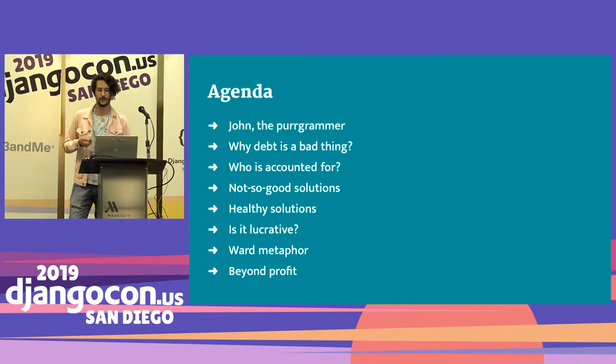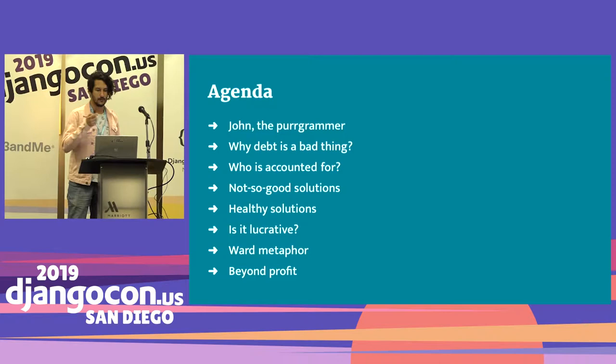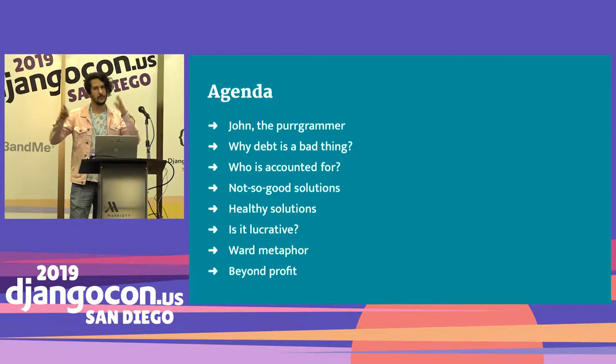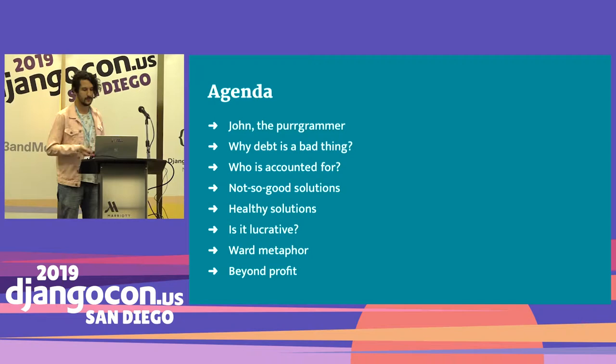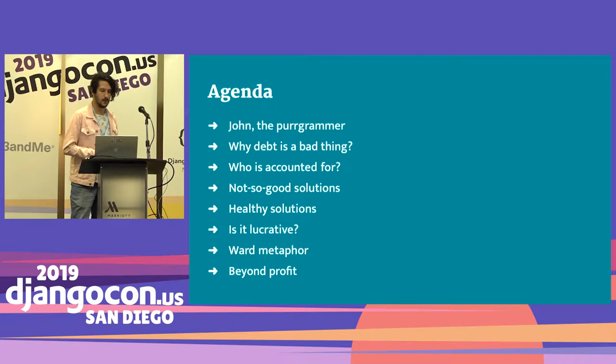The agenda of this talk: we will start with a short story about John, showing the reality of an everyday programmer. Then we'll find out why technical debt is always seen as a bad thing, and who should be responsible for that. After that, we'll go through some solutions that are not so good, and another that can be healthier for these problems. We'll discuss if it's lucrative for companies to deal with technical debt, and what the guy who coined the concept said, and what programmers can get beyond profit from dealing with technical debt.